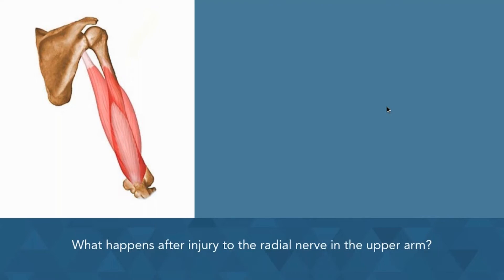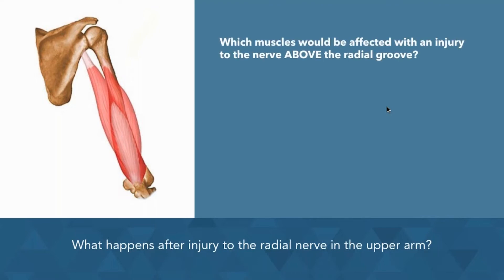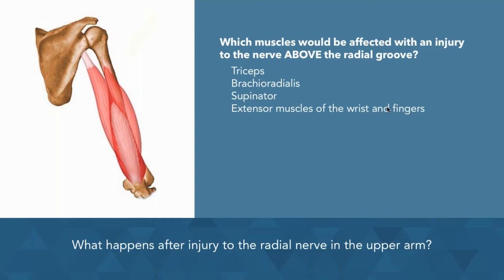Injury to the radial nerve superior to the origin of its branches to the triceps brachii results in paralysis of the triceps, brachioradialis, supinator, and extensor muscles of the wrist and fingers. Loss of sensation occurs in the area supplied by this nerve.